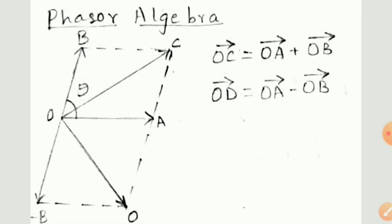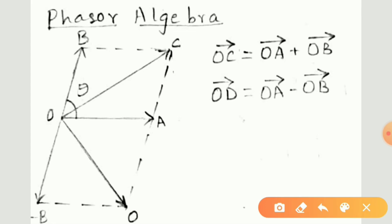Let us study about phasor algebra, that is the mathematical calculation of a vector quantity. Here a reference OA is given, and OB at positive and negative half — that is OB positive and OB negative — is shown.